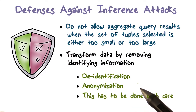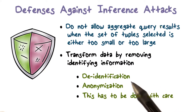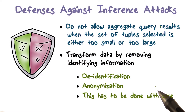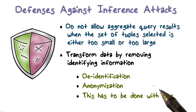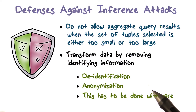Even when you do de-identification and anonymization, it has to be done with care. Depending on your dataset or what's stored in the database, this may not be sufficient. Consider an example where we're looking at people with certain diseases who live in various zip codes. Someone may be able to make an inference based on zip code and publicly available information like addresses. So we may want to drop the last digit or last two digits of the zip code.